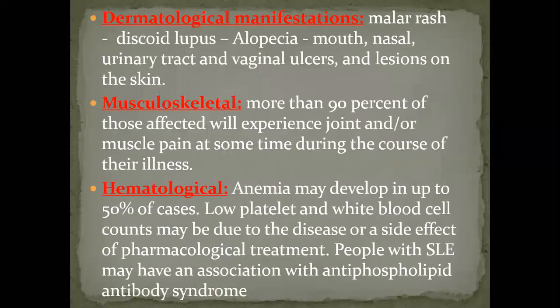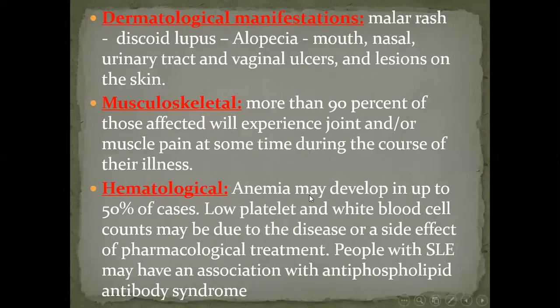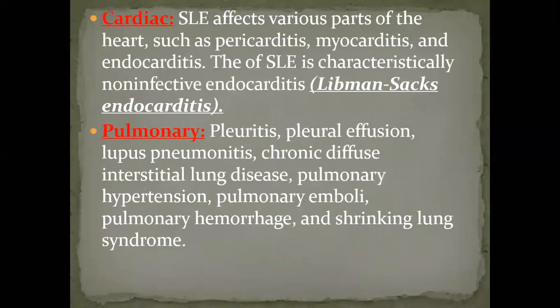Common manifestations include: dermatologic manifestations such as malar rash, discoid lupus, alopecia, mouth and nasal ulcers, and vaginal ulcers; musculoskeletal — 90% of patients have joint and muscle affection; hematologic — a large proportion have anemia, and almost half have low platelets, with possible white blood cell affection as well.